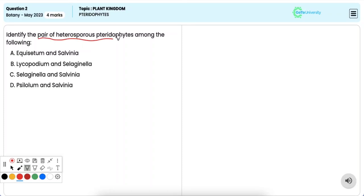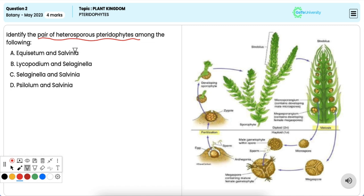The pair of heterosporous pteridophytes. Option A: Equisetum and Salvinia. It is incorrect. Equisetum is homosporous, that is, produces only one type of spore, while Salvinia is heterosporous.